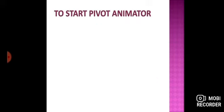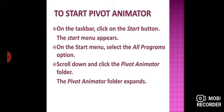Next, we have the steps to start Pivot Animator. हम Pivot Animator को start कैसे करते हैं? On the task bar, click on the start button — the start menu appears. Bottom पे task bar होता है और left side पे start button दिखता है. आप start button पे click करेंगे तो start menu appear होगा. On the start menu, select All Programs option. Start menu में All Programs option आता है, आप उसको select करेंगे. Scroll down and click the Pivot Animator folder. तो आप देखेंगे कि Pivot Animator का एक folder दिखेगा आपको.